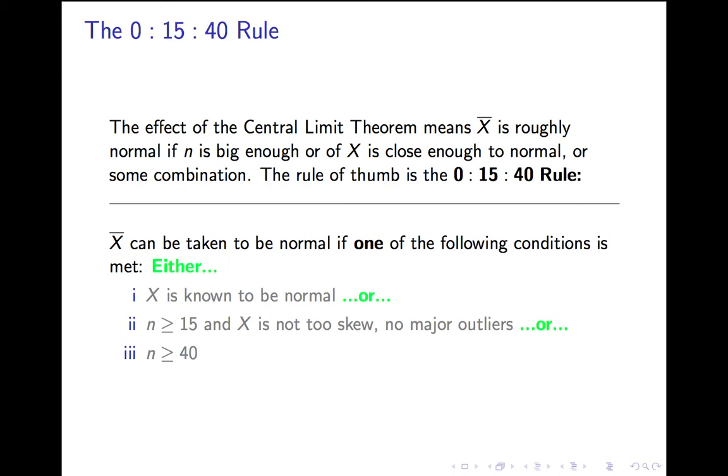Here's the 0-15-40 rule. It says that x-bar can be taken to be normal if one of the following conditions is met. You only need one to be met. Either the original, the population distribution X, is known to be normal. If X is normal, you're all set. You don't need to know anything about n. Or, here's the intermediate case, if the sample size is at least 15 and X is not too skewed and doesn't have any huge outliers. In other words, if X is okay and n is pretty big. And finally, if n is more than 40, or 40 or more, you don't need to know anything about X.